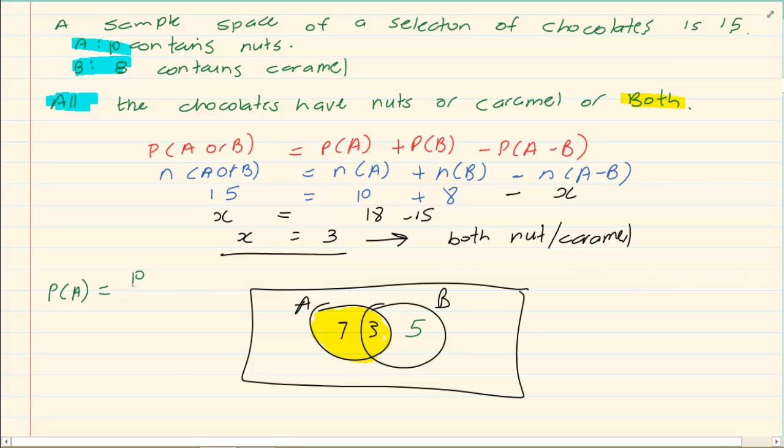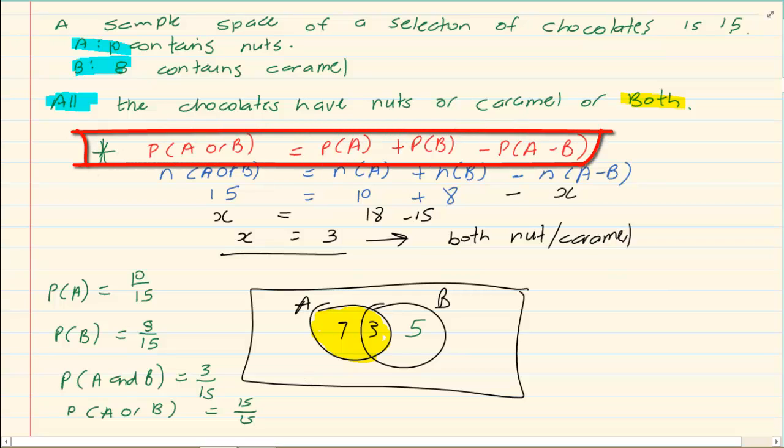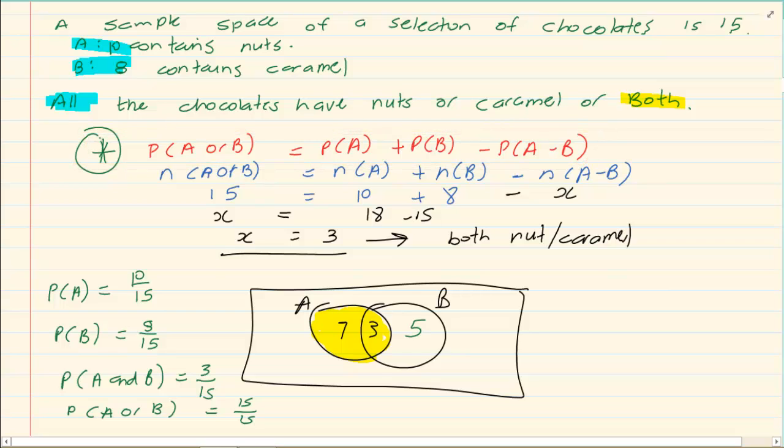So if I ask you what is the probability of A only? So only A means it's 10 over 15. The probability of B is going to be 8 over 15. The probability of A and B is going to be 3 over 15. And the probability of A or B is going to be 15 over 15, because there is no outside space. So you must be able to understand this formula. This formula is for inclusive, which means we are talking of when they are overlapping.